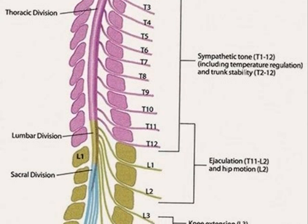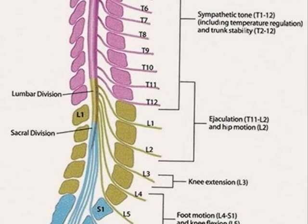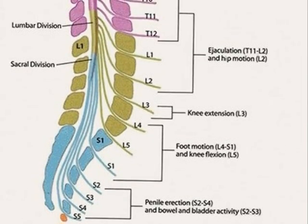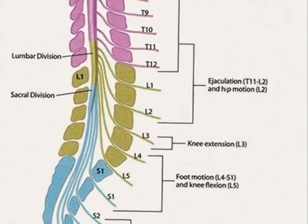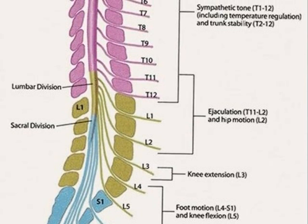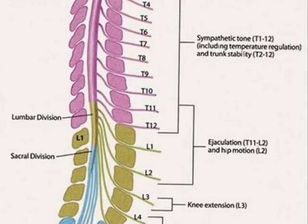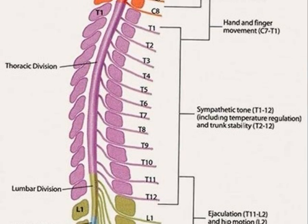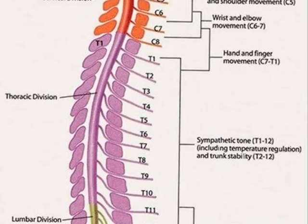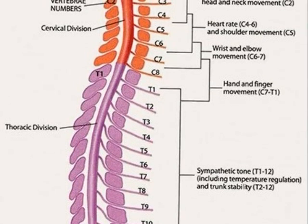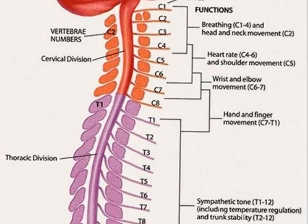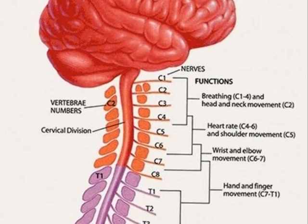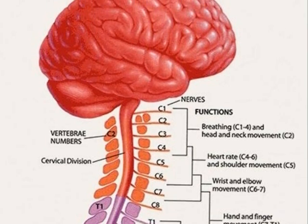The autonomic nervous system affects the heart rate, respiratory rate, digestion, salivation and perspiration. Spinal cord injury is damage to the nerves within the spinal canal, thereby affecting the spinal cord's ability to send and receive messages from the brain to the body systems that control sensory, motor and autonomic function below the level of injury. A spinal cord injury can be complete or incomplete. In a complete injury, nerve damage obstructs every signal coming from the brain to the body parts below the injury.